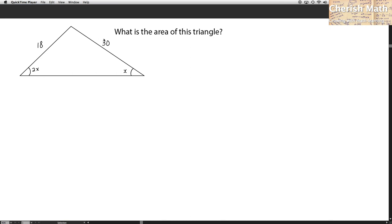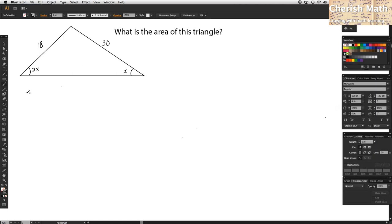We want to find the area of this triangle. So the first step to solve this problem is by using the sine rule. Now sine x divided by 18 is the same as sine 2x divided by 30.